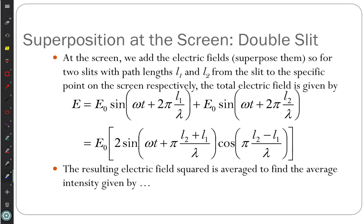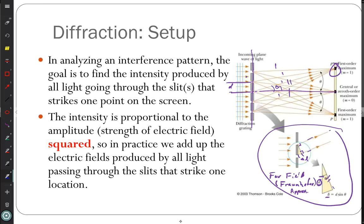The total electric field for two slits is the electric field from one slit plus the electric field from the other. E equals E-naught times sine of omega t plus 2π L₁ over lambda, plus E-naught sine of omega t plus 2π L₂ over lambda, where L₁ is the distance from slit one to the point and L₂ is the distance from slit two to the same point.